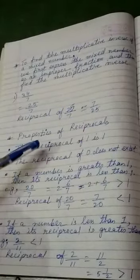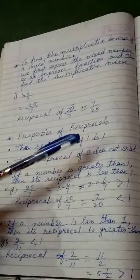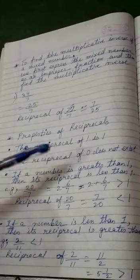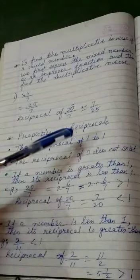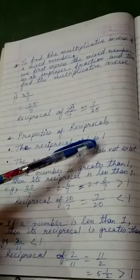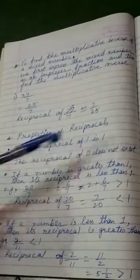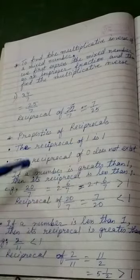Now, here we will deal with some properties of reciprocals, that is the reciprocal of 1 is always 1. 1 multiplied with 1 is equals to 1. So, the reciprocal of 1 is always 1.